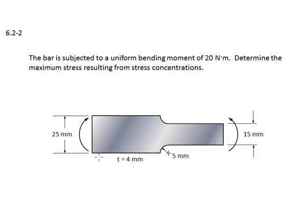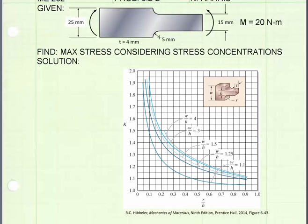Here is the bar. A moment is being applied and the dimensions are given, and we see that there is a change in cross-section abruptly halfway along. To solve this problem we are going to be using this chart taken from Hibbeler's Mechanics of Materials 9th edition. To use this chart we need to get a couple of ratios.